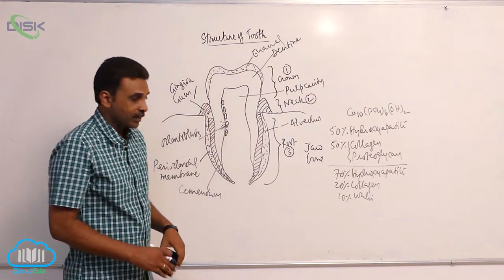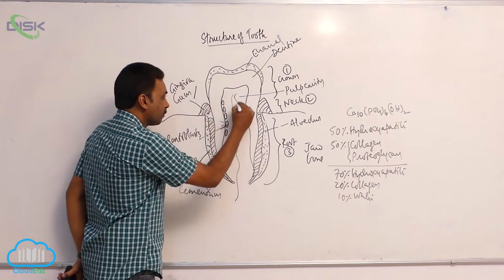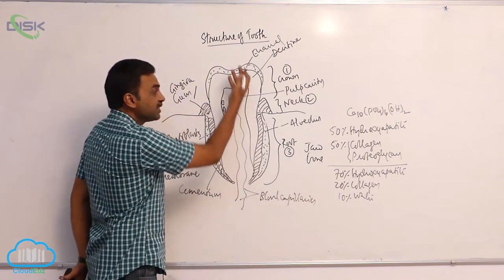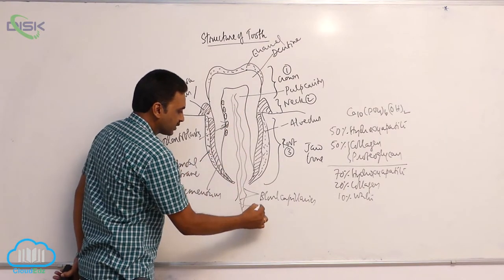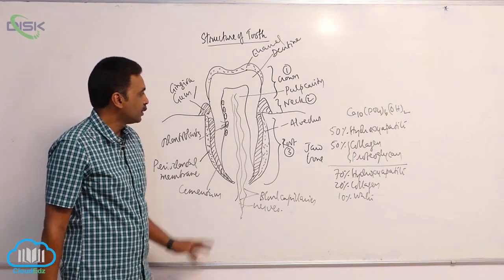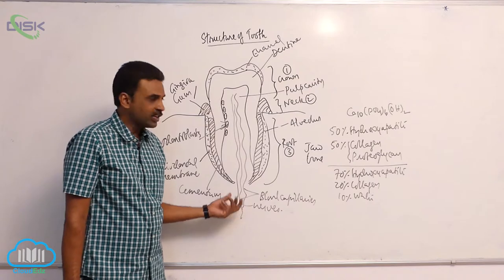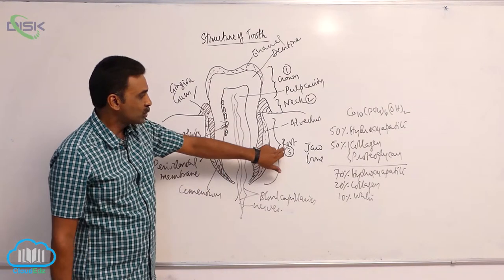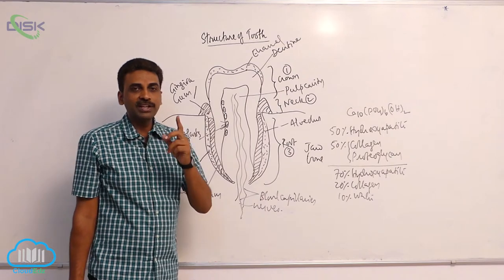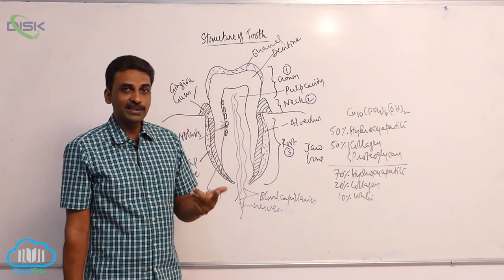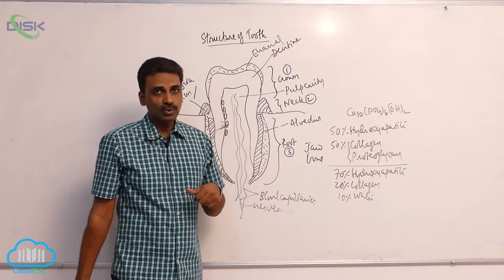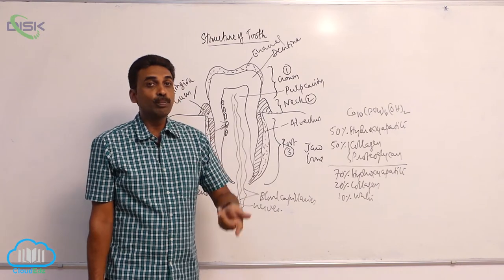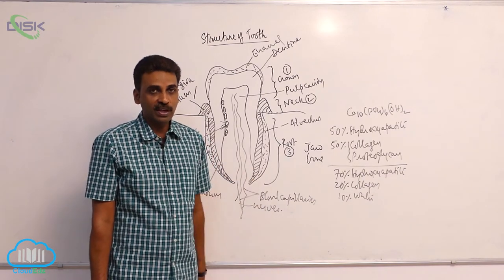In the pulp cavity, blood capillaries of arteries and veins enter, and nerves also enter through the pulp cavity. The root is generally single for most teeth — all incisors, all canines, and lower premolars have one root. But in some teeth there are two or three roots; when more than one root is present, they are called supernumerary roots.